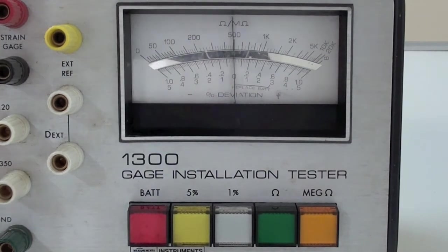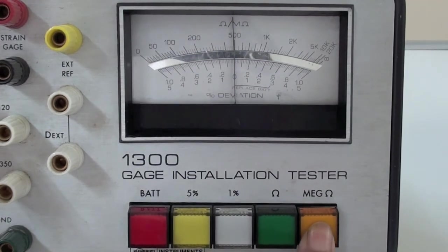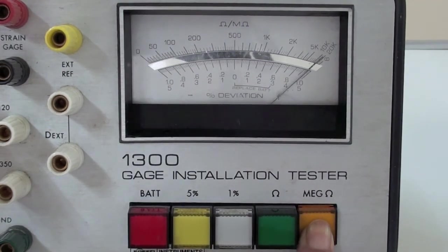For checking the insulation resistance between the gauge and the test specimen, the megaohm button is selected. Here we get a reading of more than 10,000 megaohms.